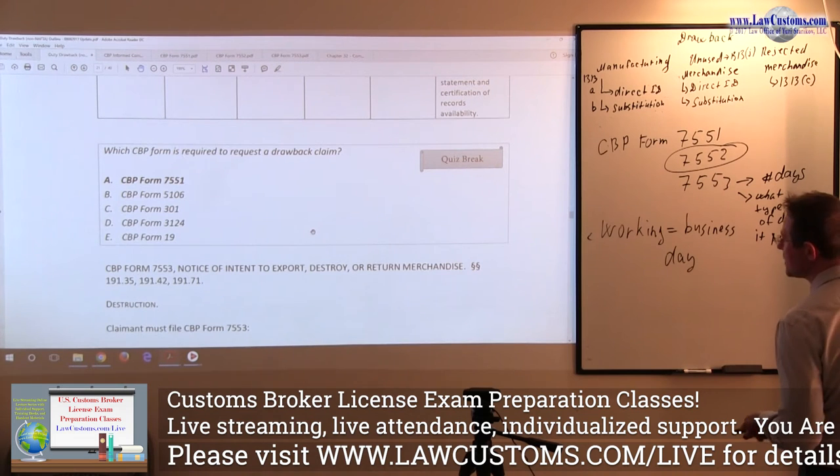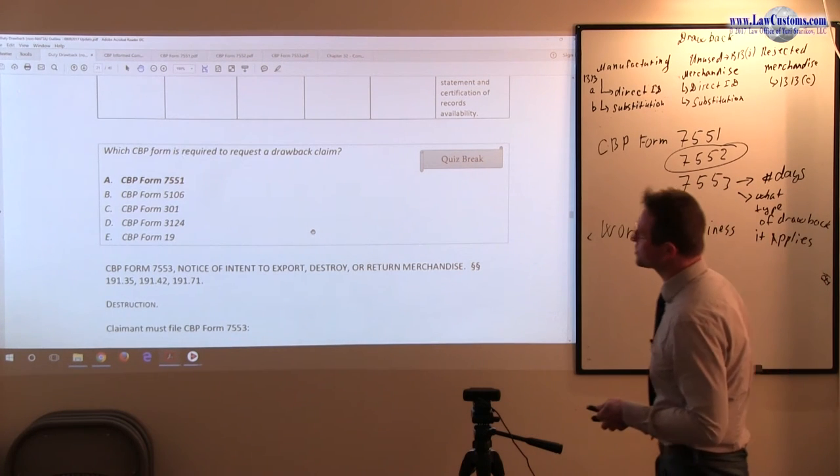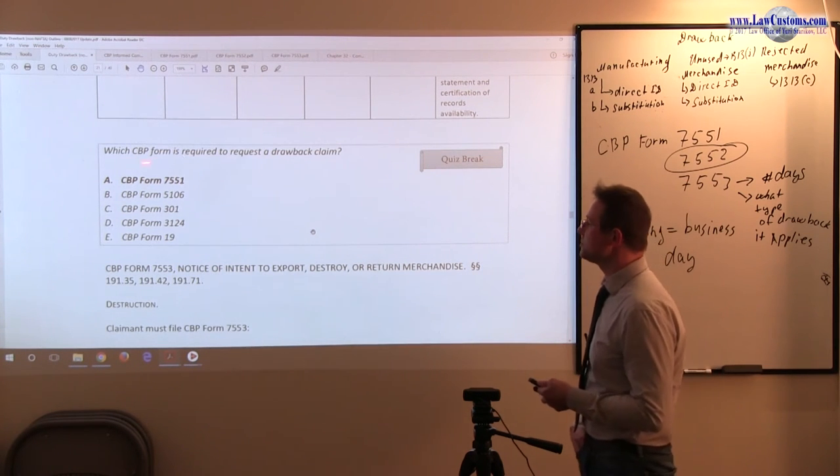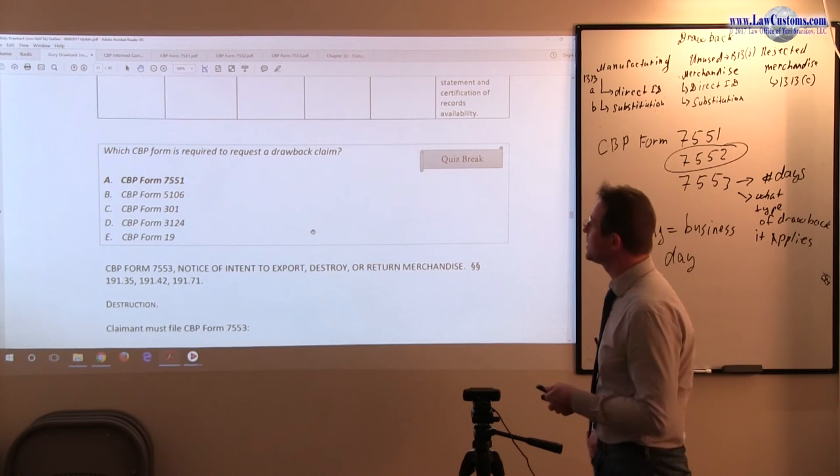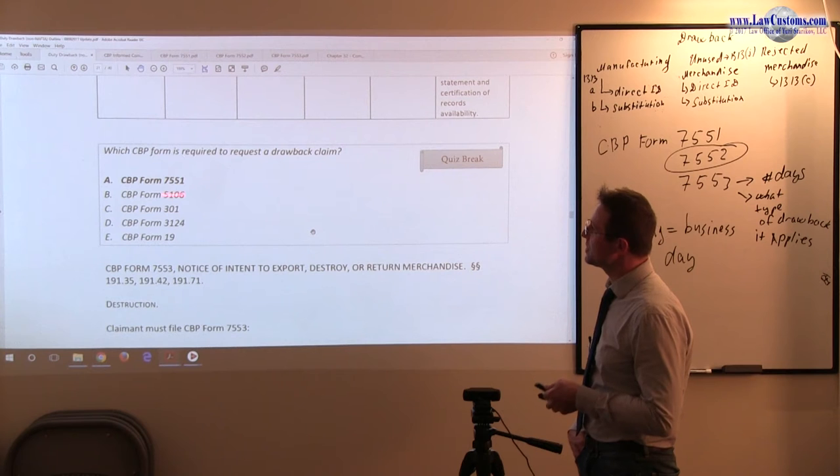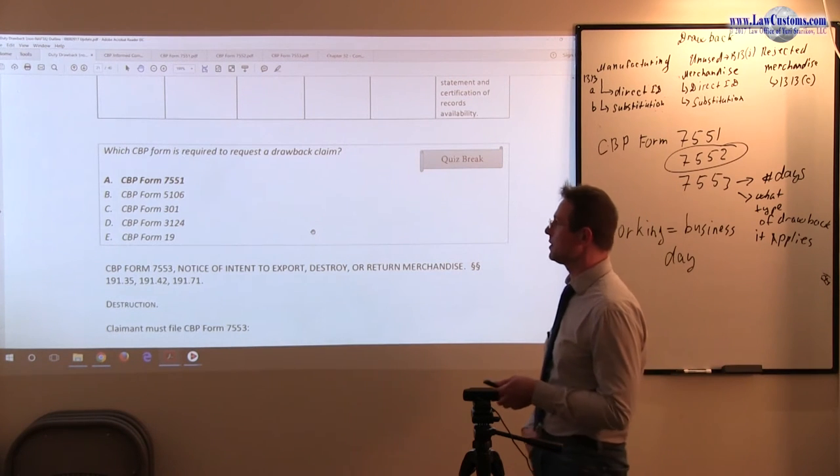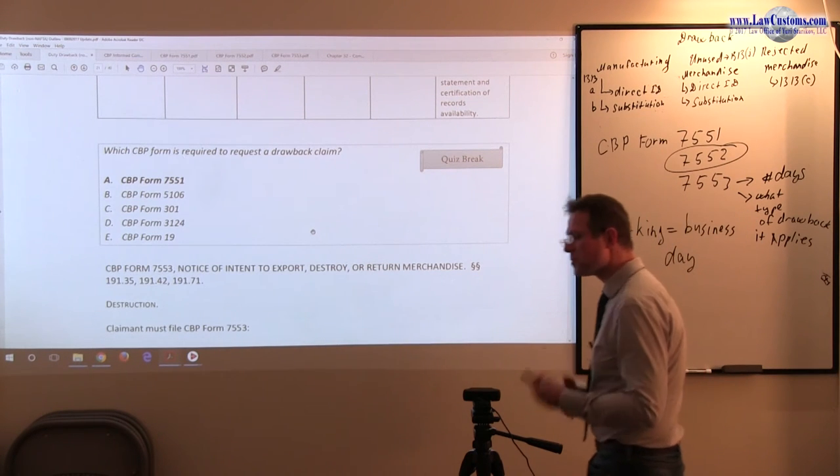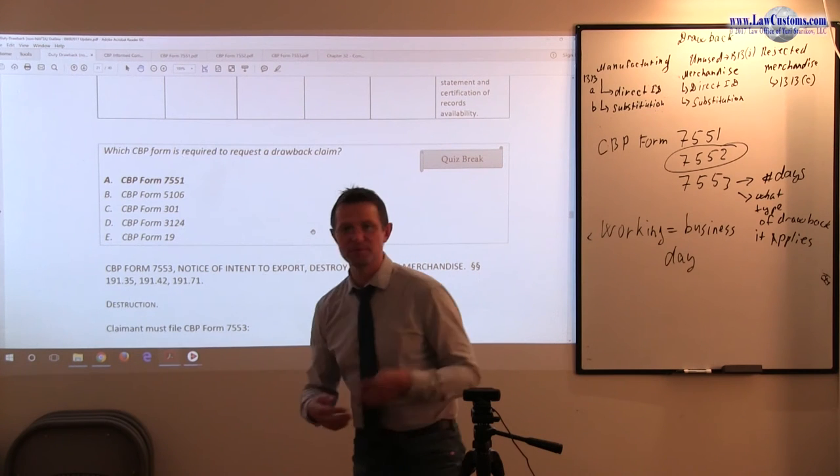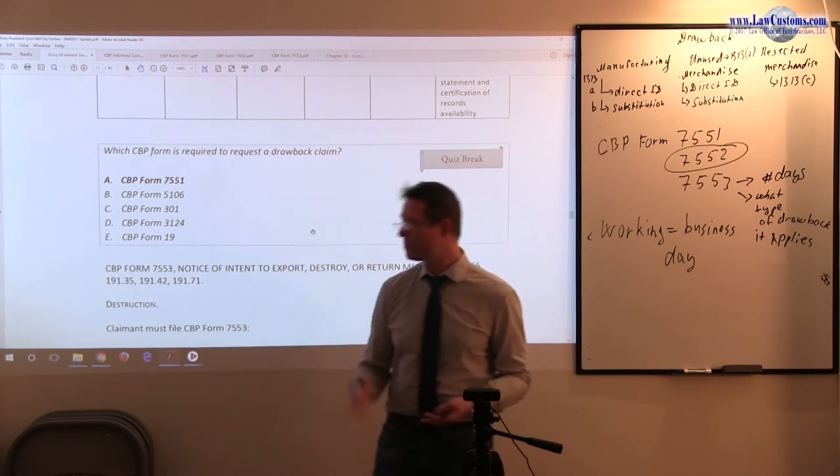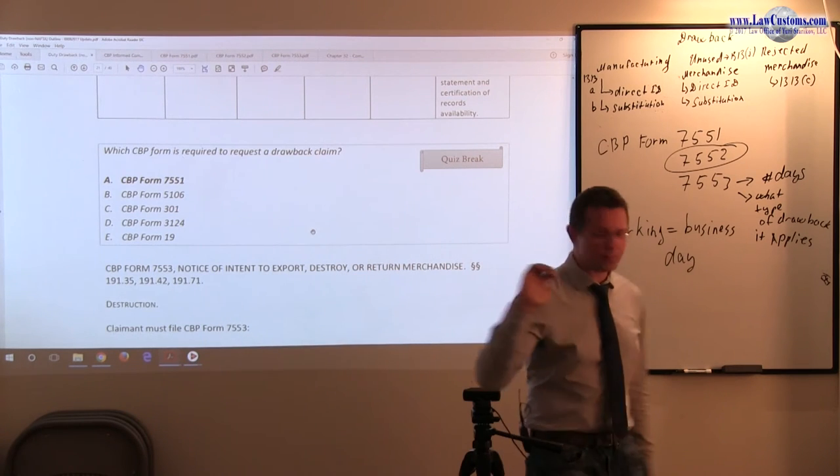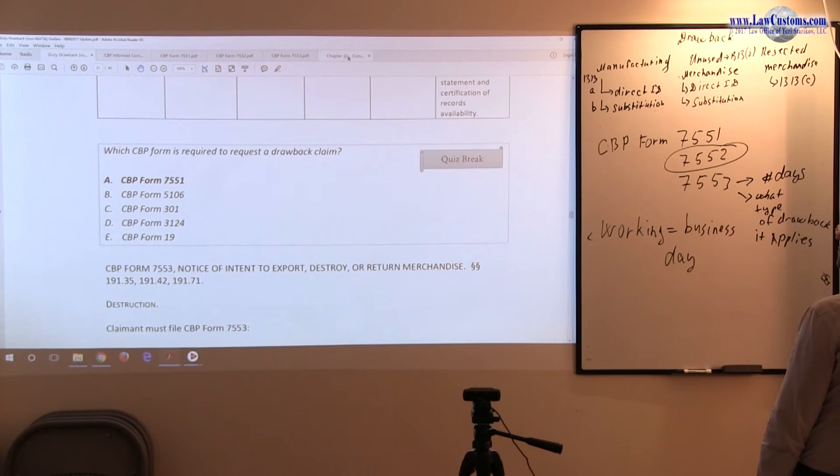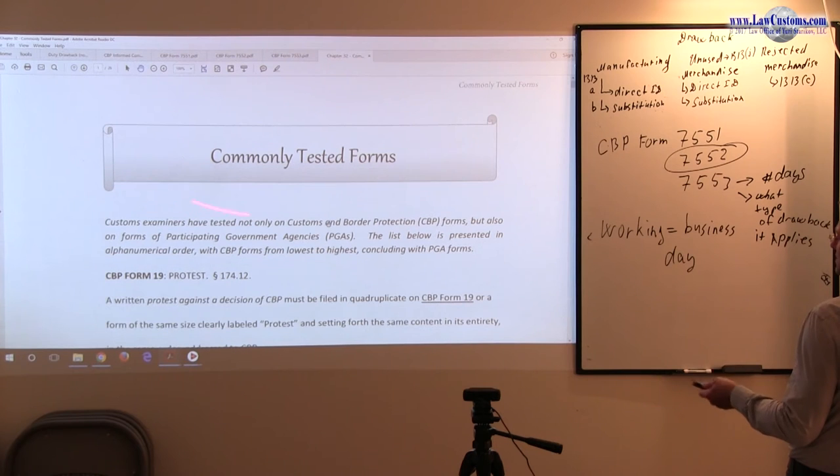Here is one of the quiz breaks, one of the questions from the past which is pretty straightforward. Which CBP form is required to request a drawback claim? And of course the drawback claim is done under the CBP form 7551. Those CBP form questions are pretty easy to answer if you come in and you sit down prepared.